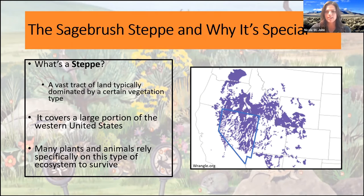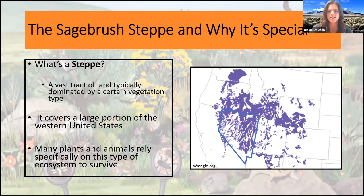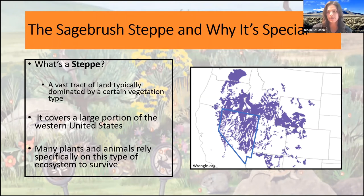Of course, there's going to be some slight differences in vegetation throughout these ecosystems — if you're up in Washington, you might have some different plant species than we do down here in Nevada. But the commonality between the sagebrush steppe and all these interconnected ecosystems is sagebrush. Nevada is highlighted in blue on our map and the sagebrush steppe covers a majority of our state. Another nickname for Nevada besides the Silver State or the Battle Born State is actually the Sagebrush State. There are a vast array of plants and animals that rely specifically on this type of ecosystem for their survival.